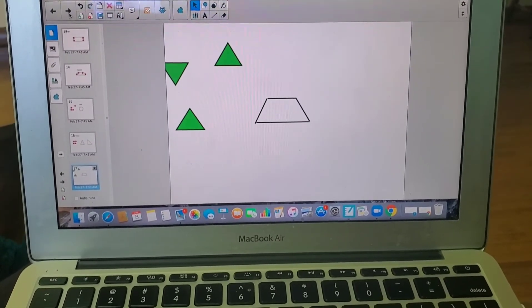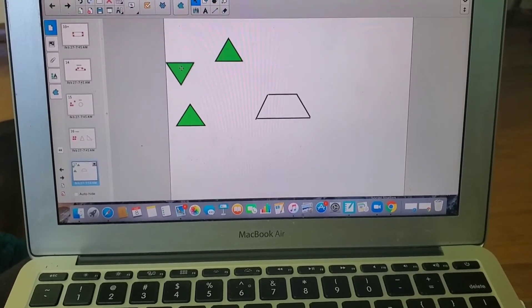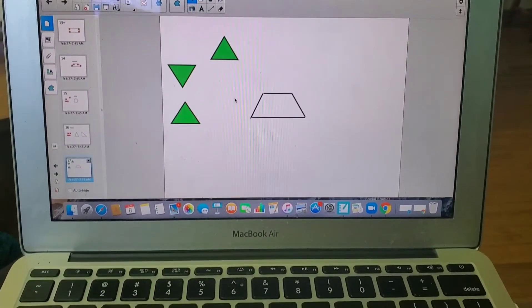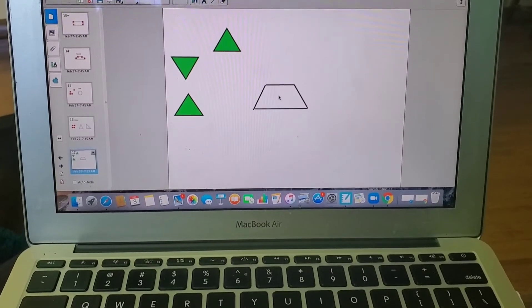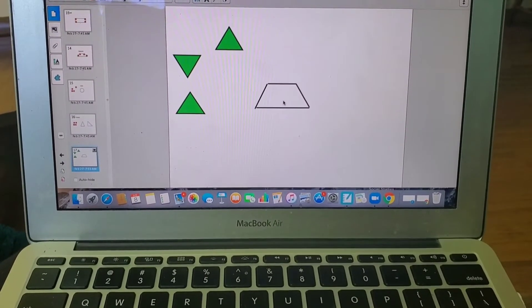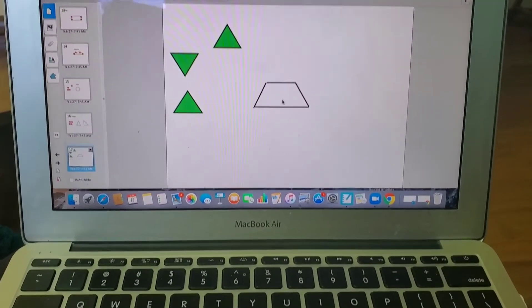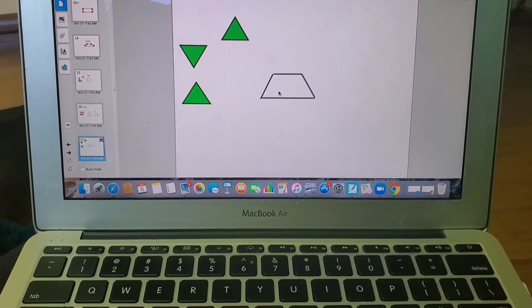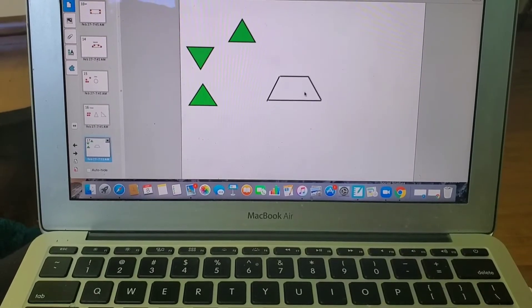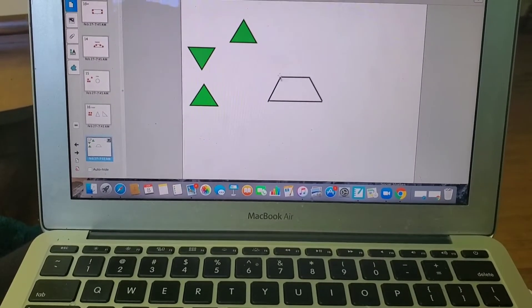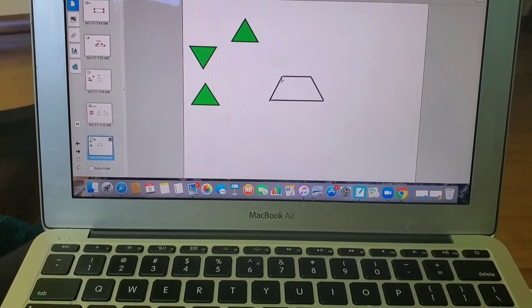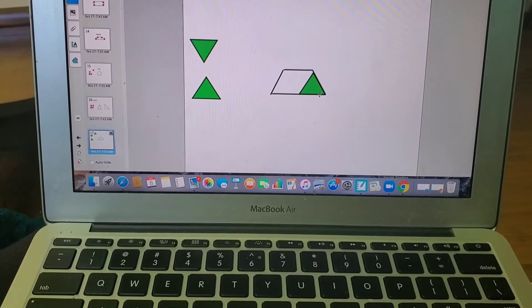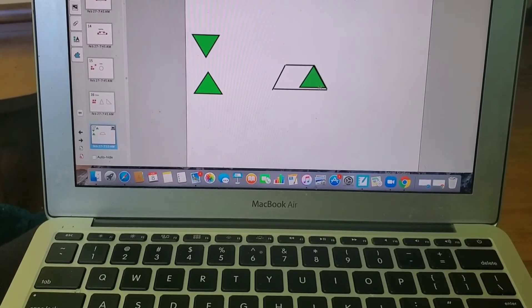Now we're going to move on to the next part of our lesson. We're done looking at square corners. What is this shape right here? You guys are right, it is a trapezoid. Did you know that you can make shapes with smaller shapes? Let me show you. I have my trapezoid here and I'm going to use three small triangles to make this trapezoid.